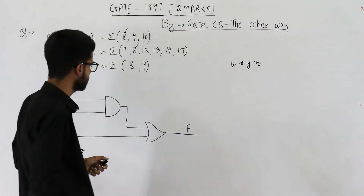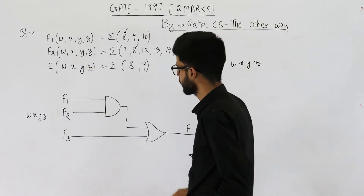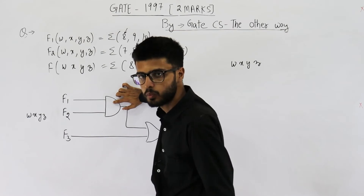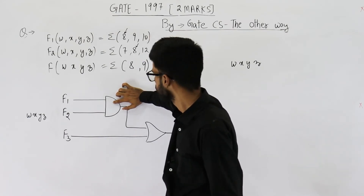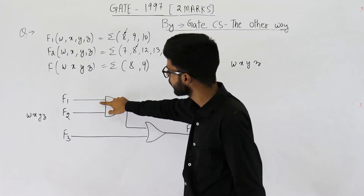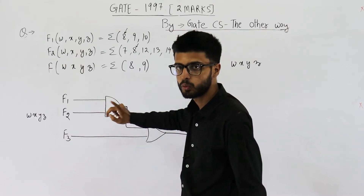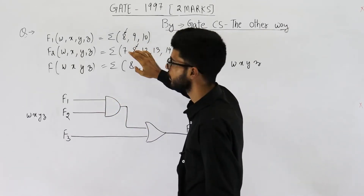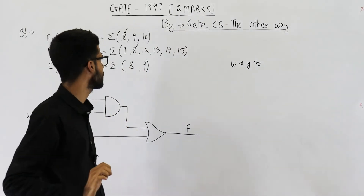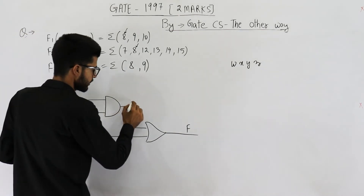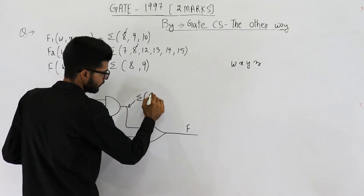Now let's try to find out what the output of this first gate is. This is an AND gate. An AND gate outputs 1 only when both of its inputs are high. That means you'll get a 1 here only when both F1 and F2 are high — and that happens only at minterm 8. There is no other input such that both of them are high at the same time. That means this function will be high only at 8.